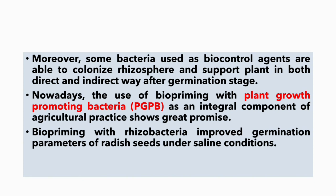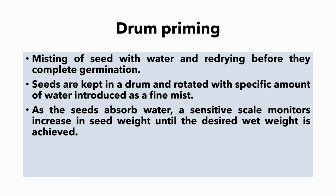Drum priming involves misting of seeds with water and redrying before they complete germination. Seeds are kept in a drum and rotated with a specific amount of water introduced as a fine mist. As the seeds absorb water, a sensitive scale monitors the increase in seed weight until the desired weight is achieved.